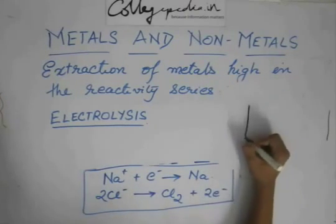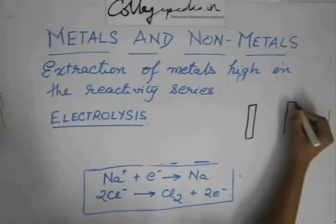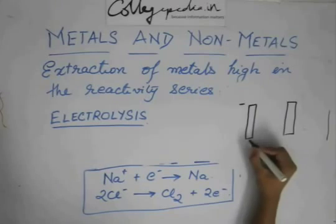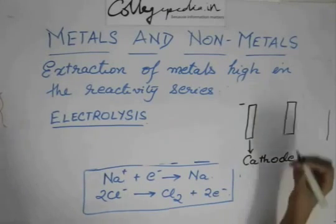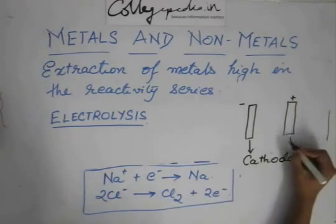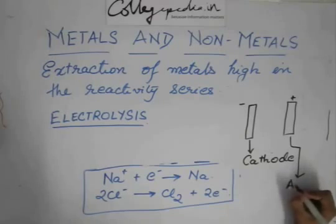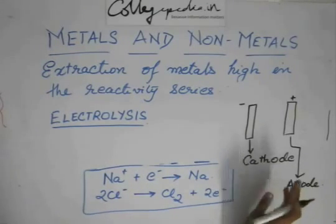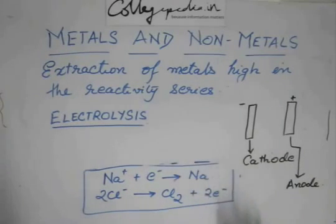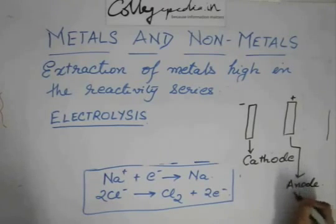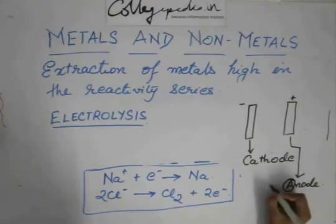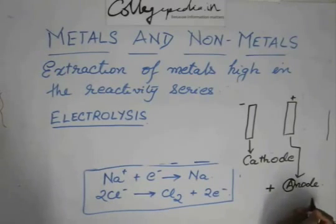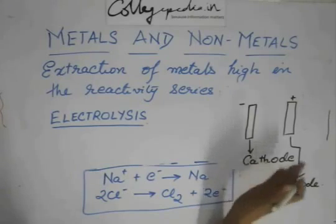Now, this plate which is negatively charged is called the cathode. There will be a lot of confusion regarding which one is cathode and which one is anode. A simple way to determine this is that anode starts with an A and addition also starts with an A. So anode should be positive, which is the symbol of addition. Just remember this - anode, addition, so positive - and then automatically the cathode will become negative.